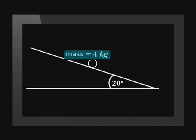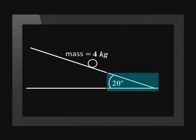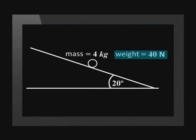The sled's mass is 4 kilograms and it is on a 20 degree slope. So the sled's weight is approximately 40 newtons. However, because of the slope, the normal force exerted on the sled is not also 40 newtons.